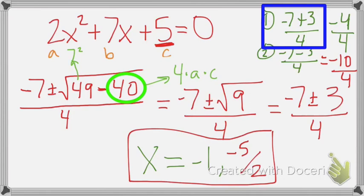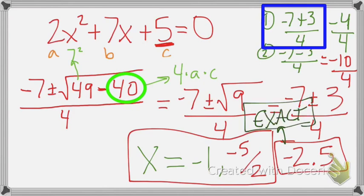And if you wanted to put the decimal, if you wanted to do negative 10 divided by 4, you would get negative 2.5. And that would be fine also. Because remember, we don't have to round it. That's exact.